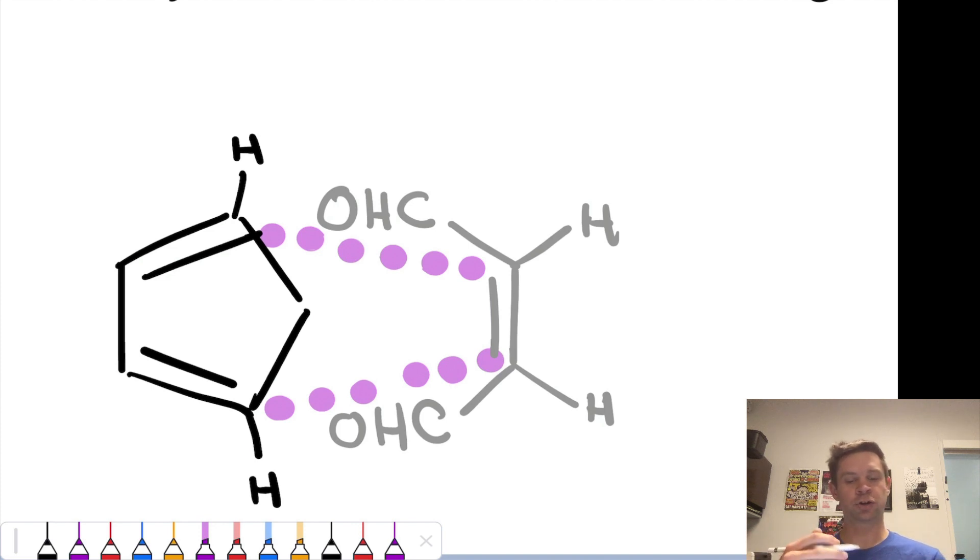As bond formation occurs, those groups will move underneath and point towards the diene. So they're in an endo orientation.